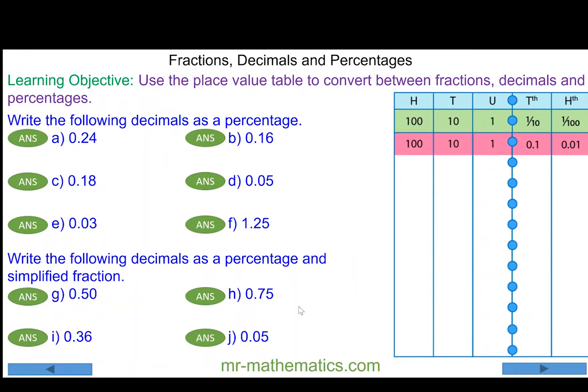In this lesson we're going to use place value table to convert between fractions, decimals and percentages. We begin with 0.24. Now we can see we have two tenths and four hundredths.